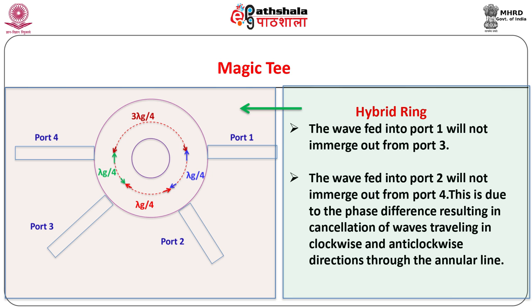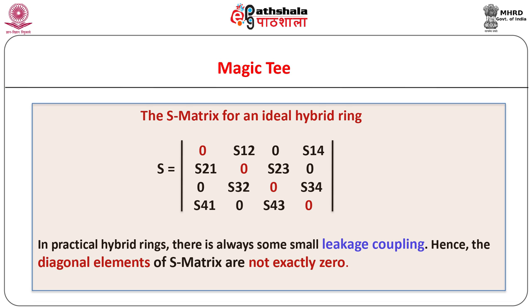Similarly, the wave fed into port 2 will not emerge out from port 4. This is due to the phase difference resulting in cancellation of waves travelling in clockwise and anti-clockwise directions through the annular line. Ideally, phase cancellation can take place only at a specified frequency for the given hybrid circuit. The S matrix for an ideal hybrid ring is as shown. In practical hybrid rings there is always some small leakage coupling — hence the diagonal elements of the S matrix are not exactly zero.